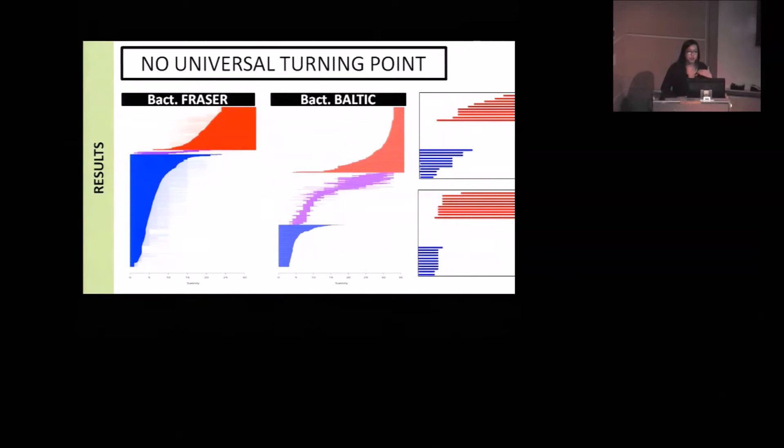There are still certain trends. For example, freshwater taxa tend to turn over sooner than marine water taxa tend to appear. But overall, there is very little uniformity in where they turn over.